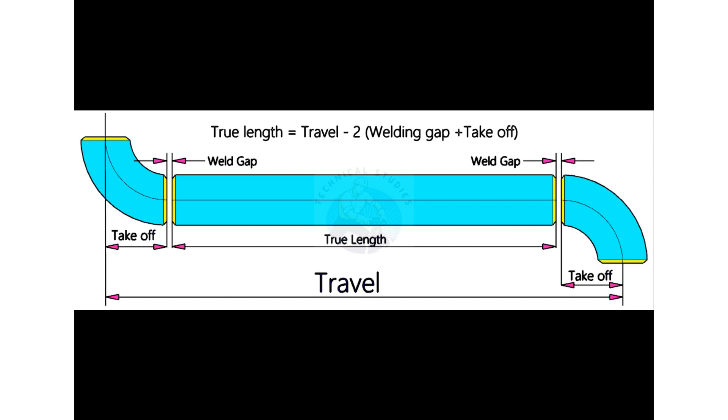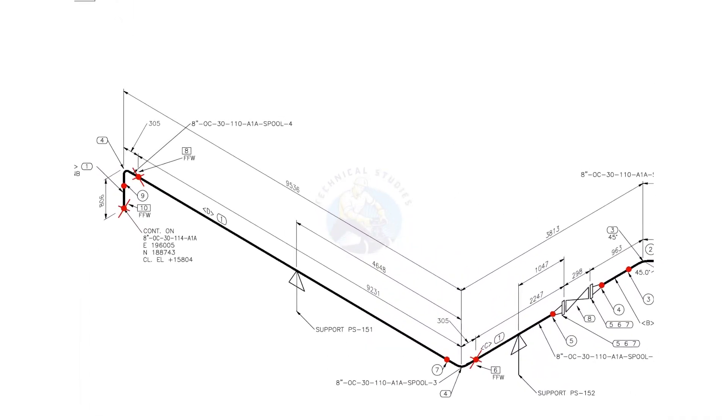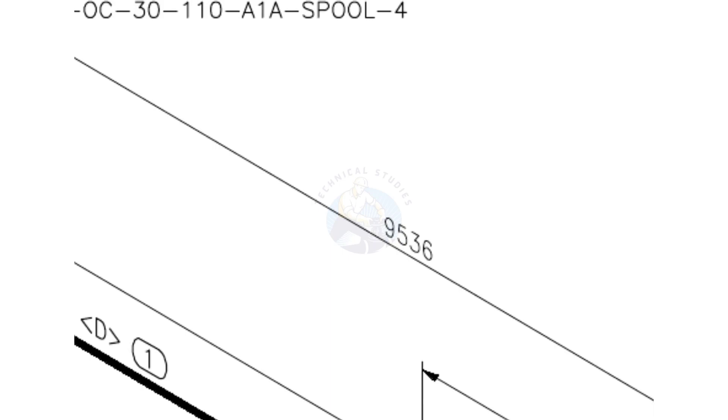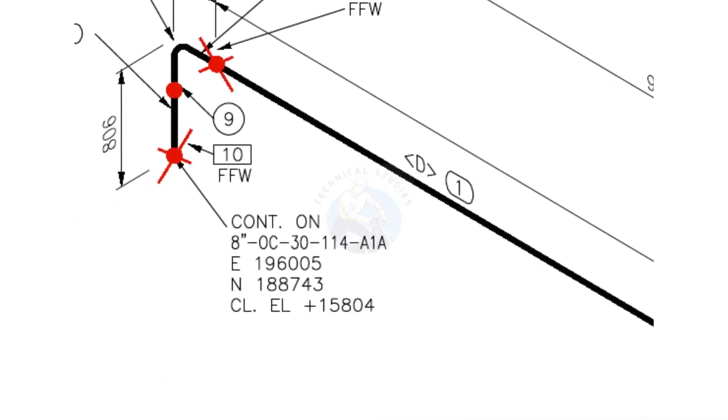Let us go to some examples. Here the travel length is 9536. Let us check the diameter of the pipe. What is the item number? Item number is 1.